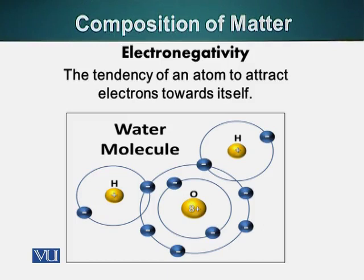It is electronegativity. Oxygen atom has eight protons — the nucleus of oxygen atom has a large positive charge — whereas the nucleus of hydrogen atom has a single proton. So, eight protons will have a much greater pull on the electrons that oxygen atom is sharing with hydrogen. Consequently, since oxygen has more hold on the electrons it is sharing with hydrogen, it keeps those electrons closer to itself. Since electrons are negatively charged, the net result is oxygen atom has a slight negative charge on it, and hydrogen atoms have a slight positive charge.